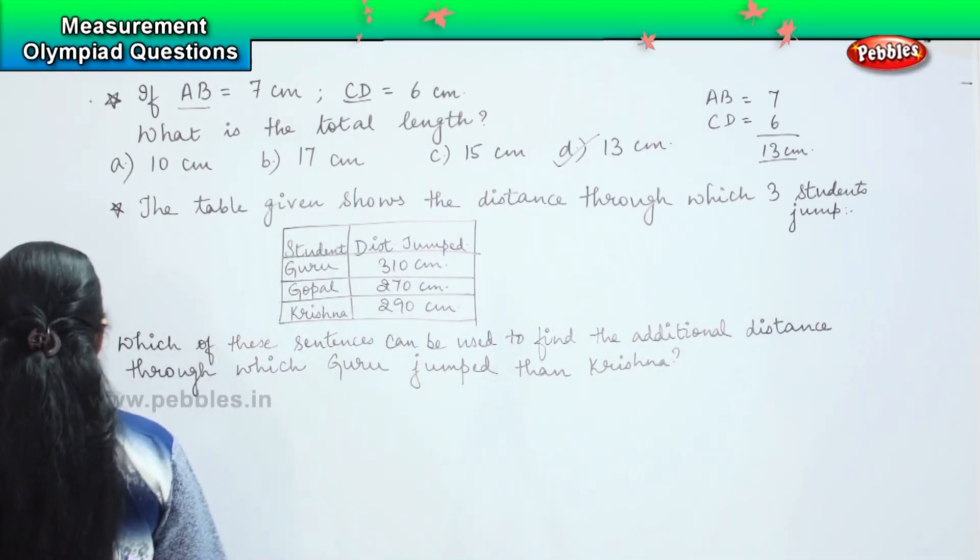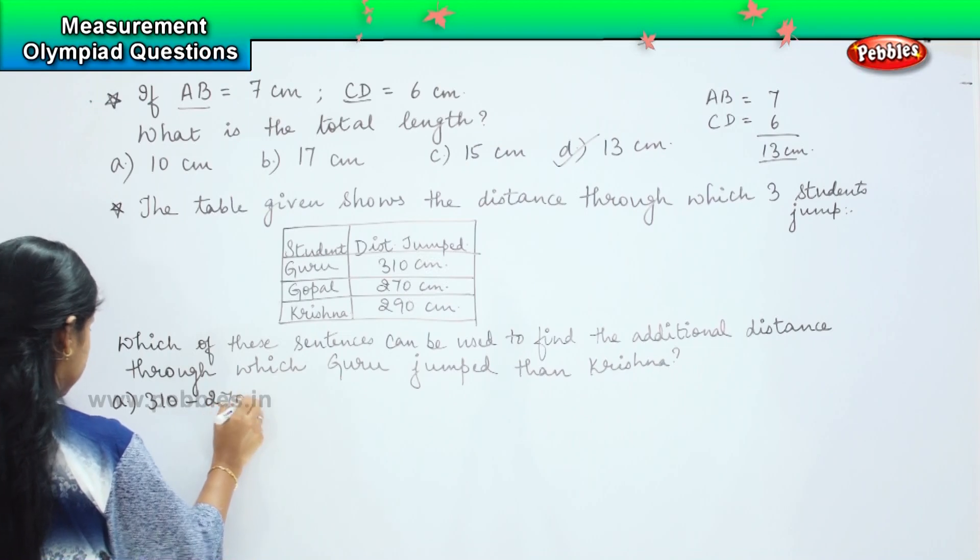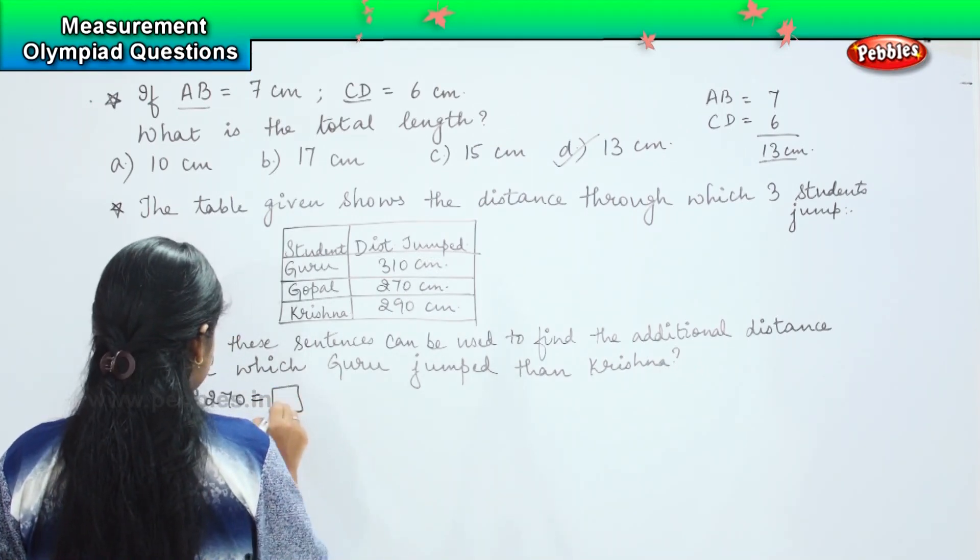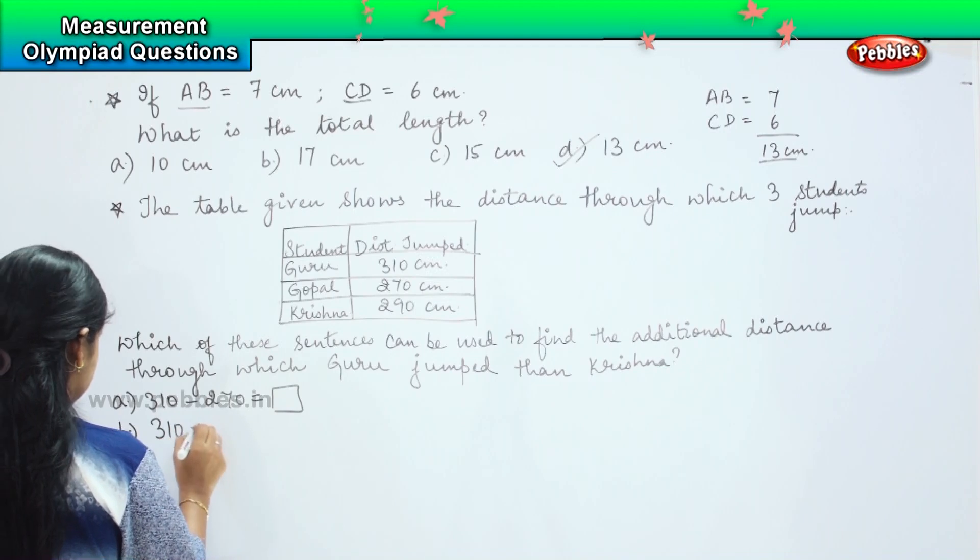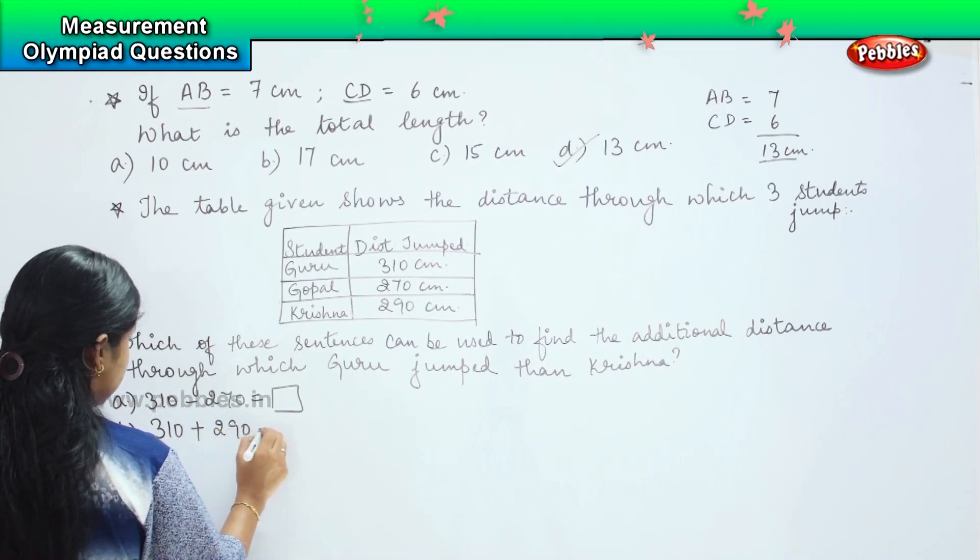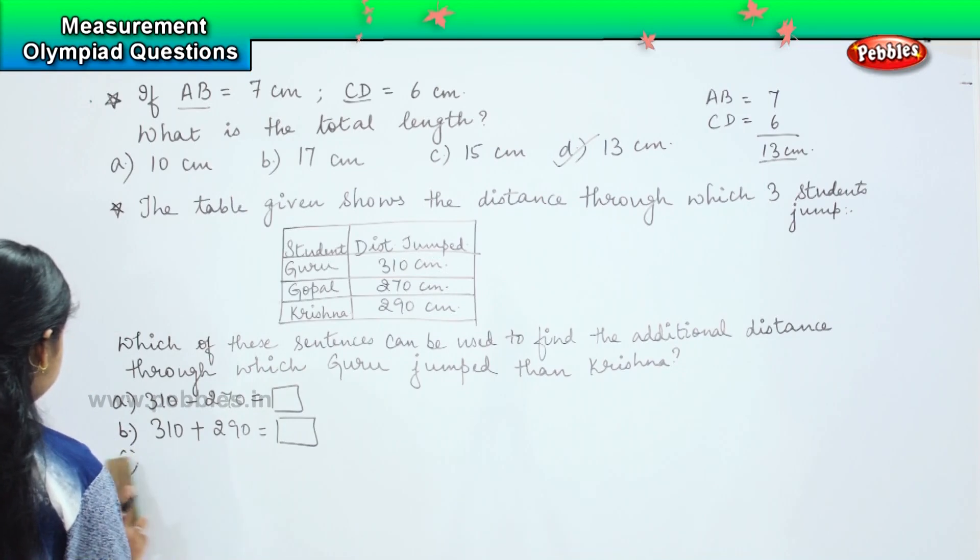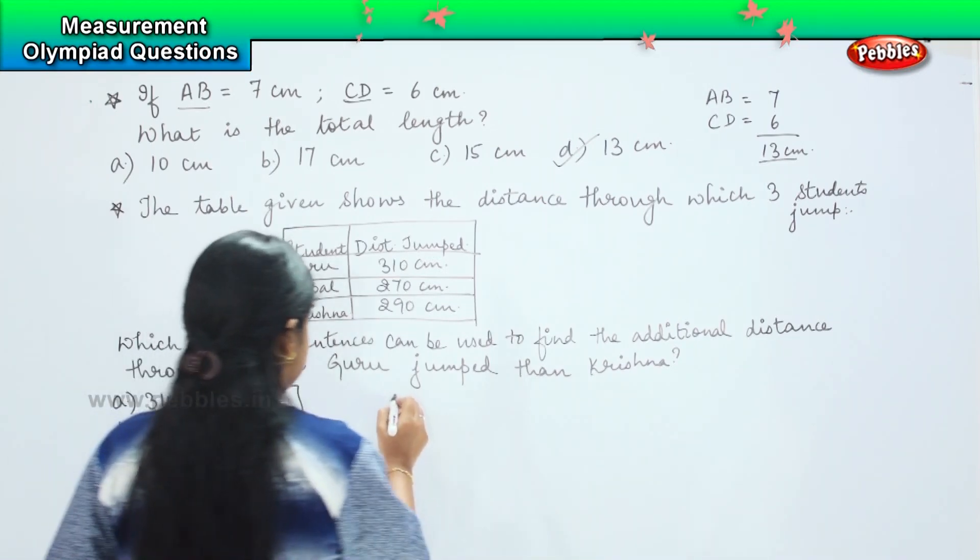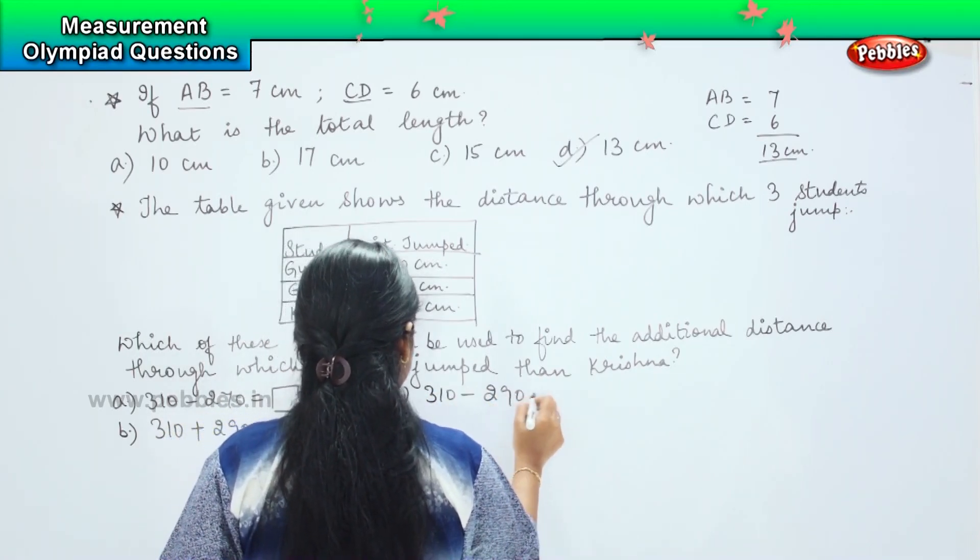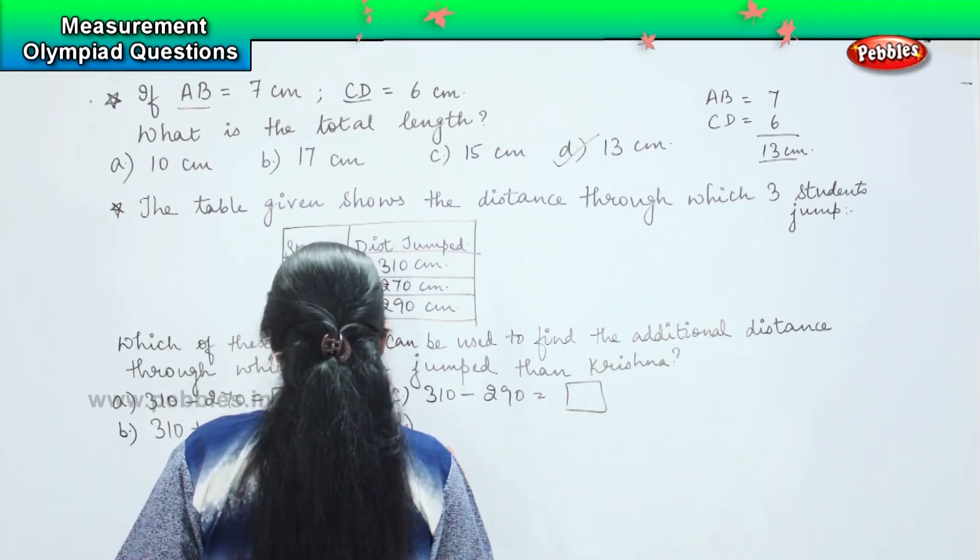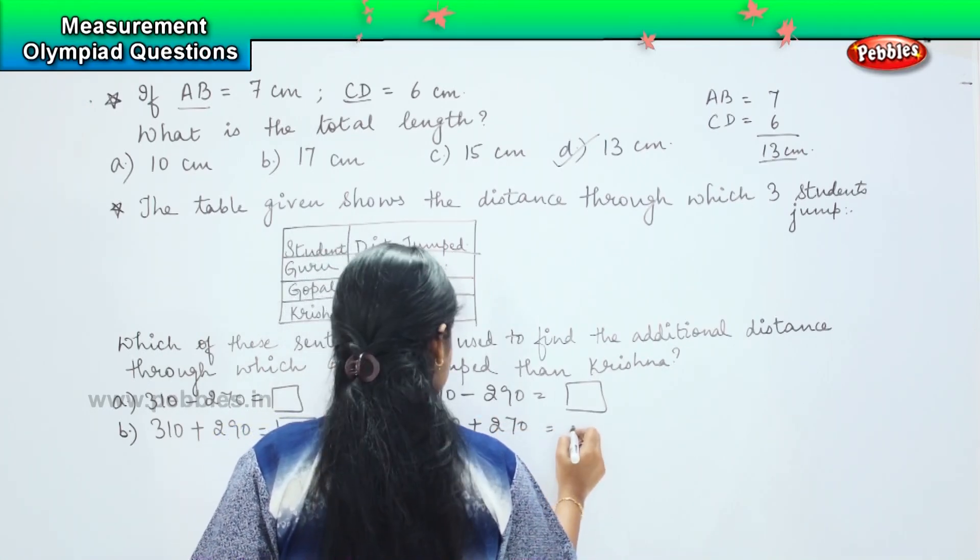Options are: a) 310 minus 270 equals to something, option b) 310 plus 290 equals to something, option c) 310 minus 290 equals to something, and option d) 310 plus 270 equals to something.